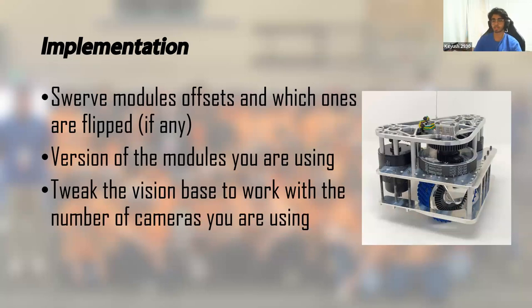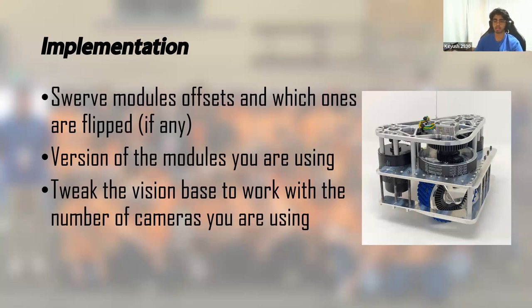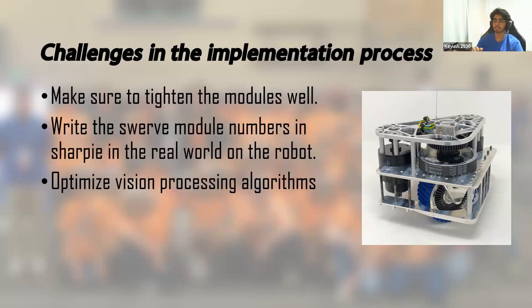A couple notes about the implementation: it's fairly easy. You just have to change some constants in a constants file — changing the offsets for motors, selecting which version of the module you're using. They natively support certain SDS module types, but since the code is open, you could add other support yourself. You also have to change the number of cameras depending on what you're using. One challenge: remember to tighten your modules, specifically the CANcoders, because if you don't glue down your magnets, they can slip over time and cause really weird issues where your modules aren't following the correct angle.